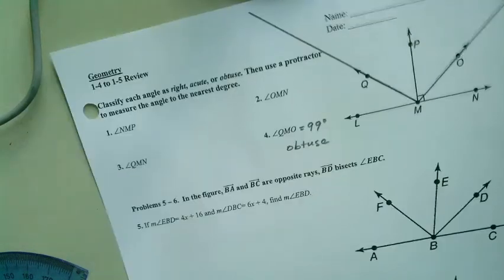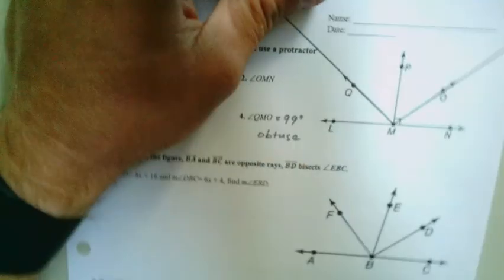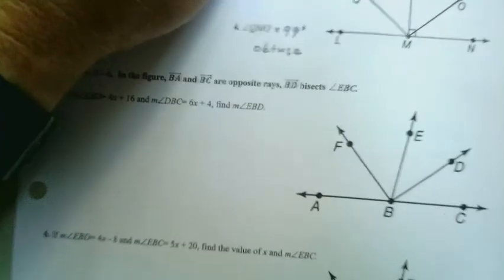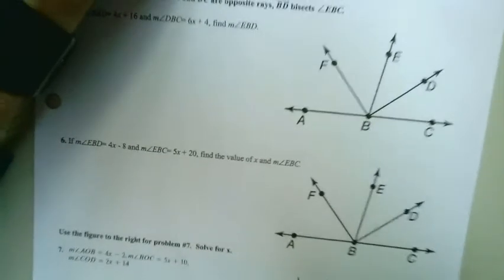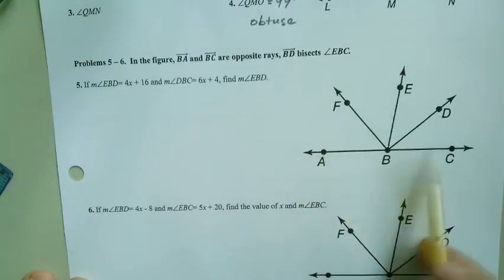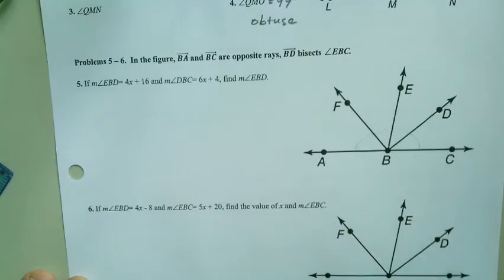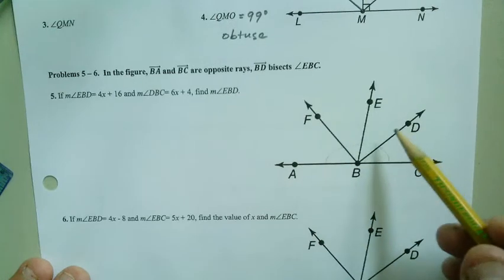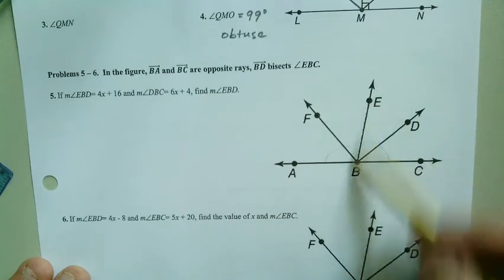Now the next section, I really like these problems. Let's take a look here at what we have. In the figure we have BA and BC. So BA and BC are opposite rays. I'm thinking to myself, 180 degrees right there. And we're told that BD bisects angle EBC. Now if you remember, what is it I want you to remember about bisects? What's the phrasing? To cut in half, right?